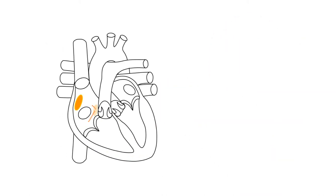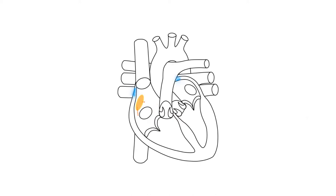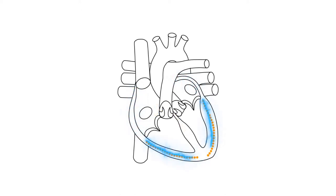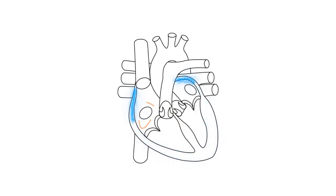This allows for a smooth flow of electrical current from the top down in the atria and from the bottom up in the ventricles. Additionally, since action potentials can spread through the contractile cells of the heart, there is no need for a neuron or any signaling from the nervous system to provide electrical signaling to each individual myocyte to cause contraction.